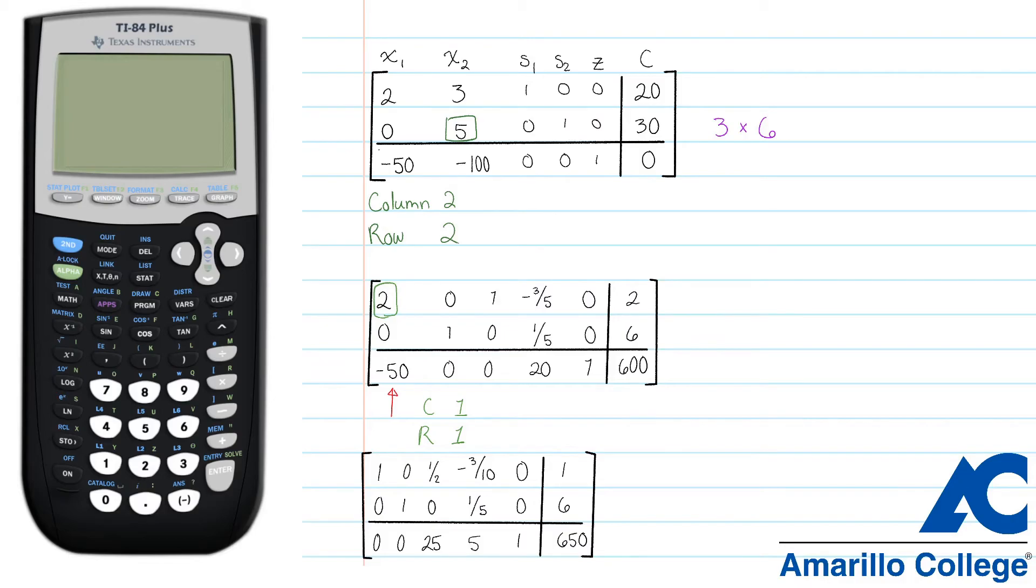Now onto reading our matrix. The variables whose columns have a 1 and nothing else are called basic. So this first column, which corresponds to x1, and the second column, which corresponds to x2, and this last column, which corresponds to z, are all called basic. We can read any basic value by finding the 1 and moving all the way to the right and reading its corresponding entry in the last column. x1 is 1, x2 is 6, and z is 650.